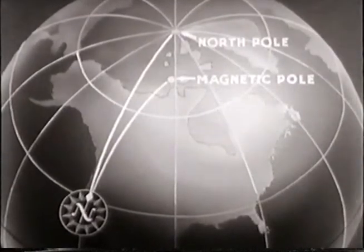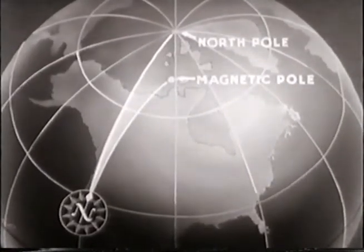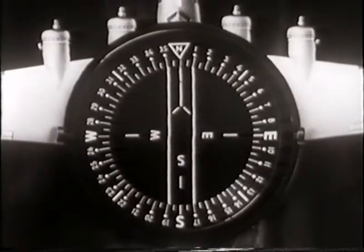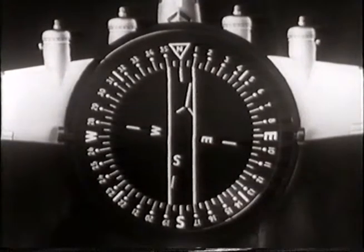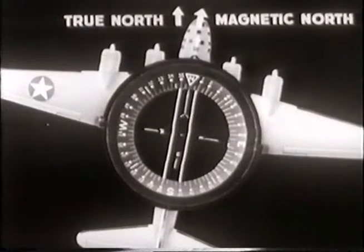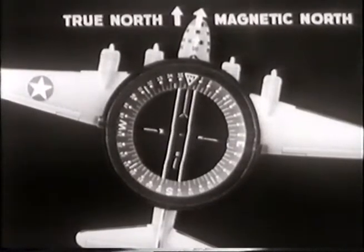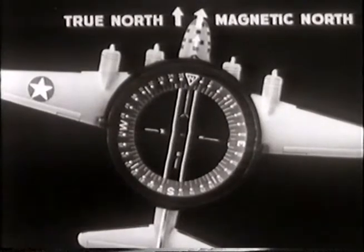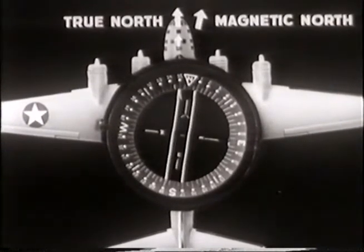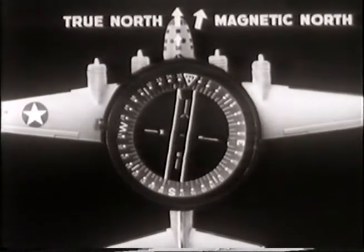However, it is necessary to allow for variation, which is the error caused by the attraction of the compass to the magnetic north instead of the geographic north pole. This condition causes the needle to depart or vary from true north, either to the east or west, depending on the airplane's position on the earth. If the airplane is located at a position where the magnetic variation is 10 degrees east, the needle will deflect 10 degrees east from true north. To overcome this error, 10 degrees must be subtracted from the compass heading by resetting the azimuth ring 10 degrees less than its original setting, and then turning the airplane until the compass needle is realigned with the parallel lines. This error is overcome, and the airplane will again make good a course of 360 degrees.